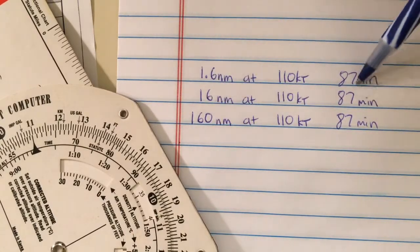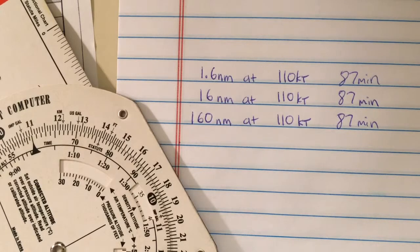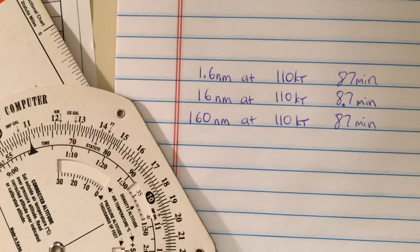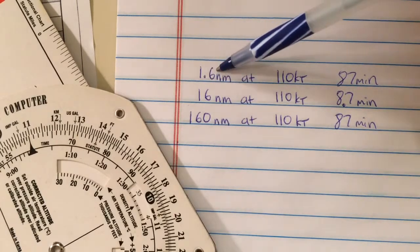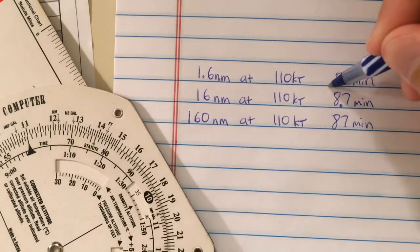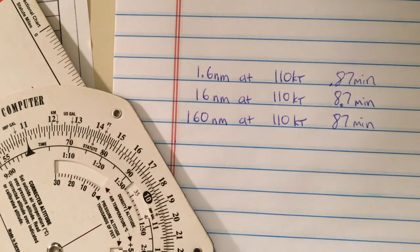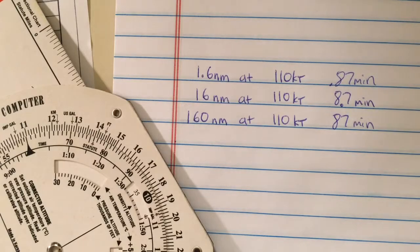So what about these two answers? These two simply need a decimal point. Instead of 87, our 16 nautical miles is actually 8.7 minutes, and our 1.6 nautical miles is actually 0.87 minutes. This all needs to be done through simple estimation and deciding what is a reasonable number.